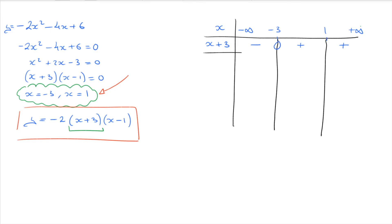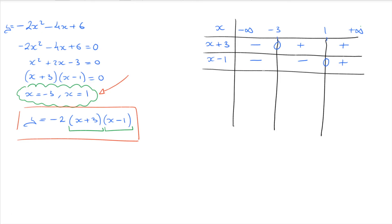We add a horizontal line and focus on the next factor, x minus 1. x minus 1 equals zero when x equals 1. For all x values less than 1, it's negative, so we add negative negative to the left of 1. It's positive for x greater than 1. We then draw another line and add the coefficient, which is negative 2. Since negative 2 is always negative, we add negatives across all columns.